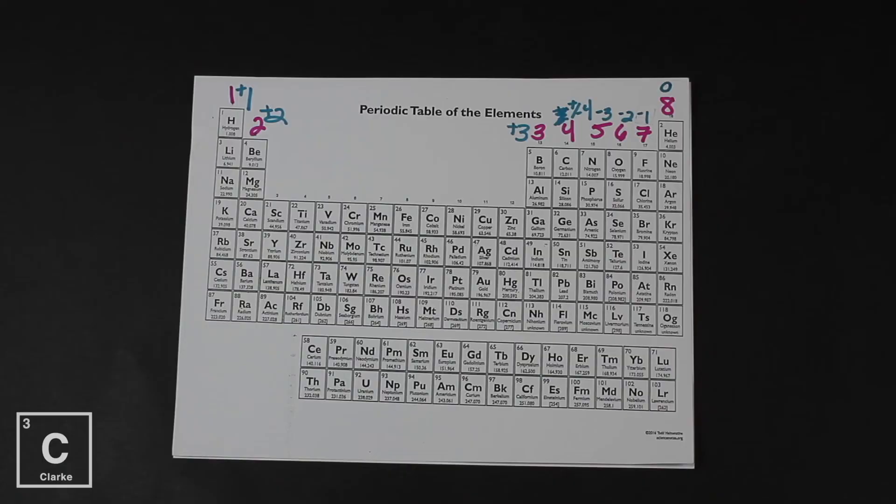Group 18 — they have a full valence shell. They're not going to lose or gain electrons. You could either label it with a zero or just leave it blank, because they are so happy with their eight valence electrons obeying the octet rule. These are not going to become ions.